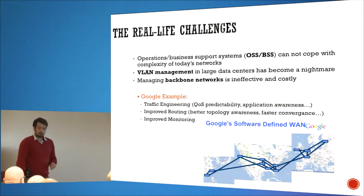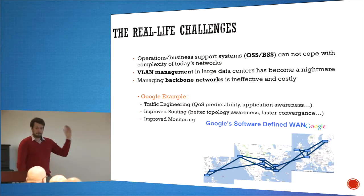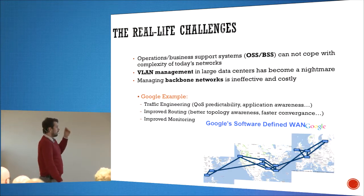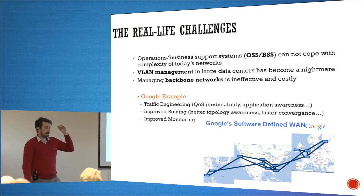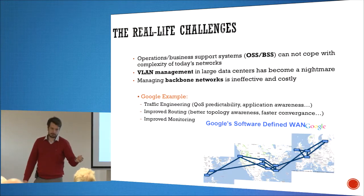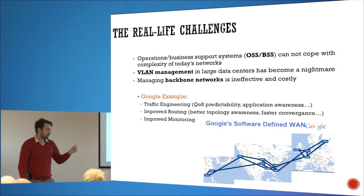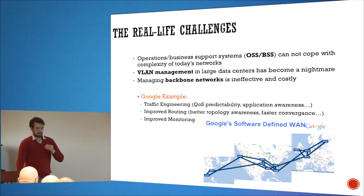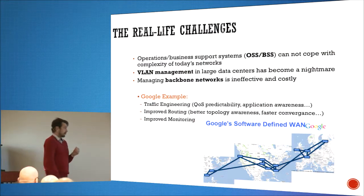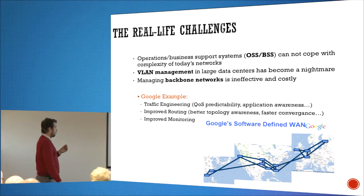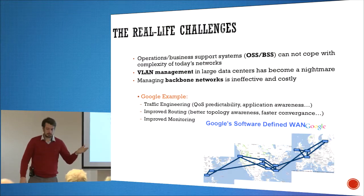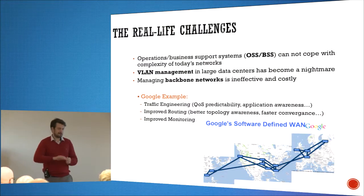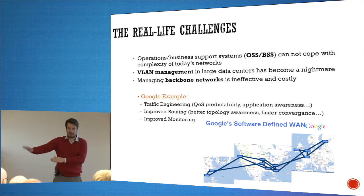Where does it all come from? It comes from the big guys — Googles, Amazons. It comes from large data centers, from international transport networks, from backbones. Huge stuff. Not the edge. Not the access network.